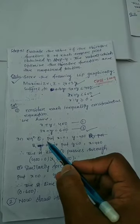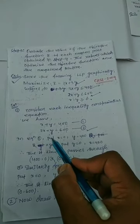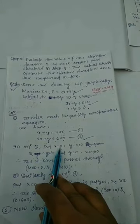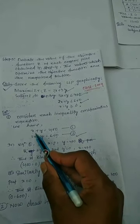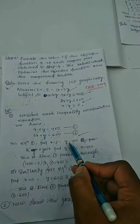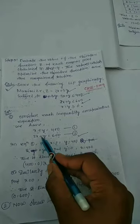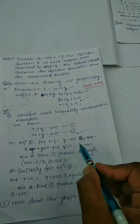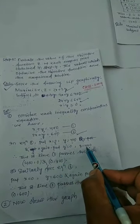Step 2: to draw a straight line we need two points. For equation 1 (3x plus y equals 400): first, put x equals 0 — then y equals 400, giving point (0, 400). Next, put y equals 0 — then x equals 400, giving point (400, 0). So we have two points on line 1: (0, 400) and (400, 0), and we can draw the graph of line 1.